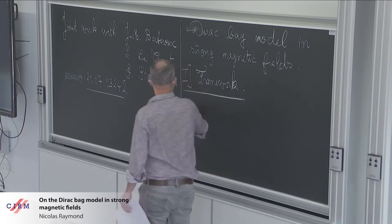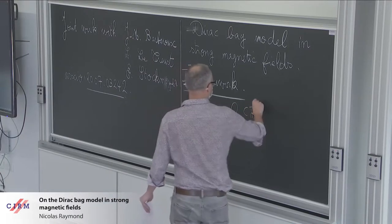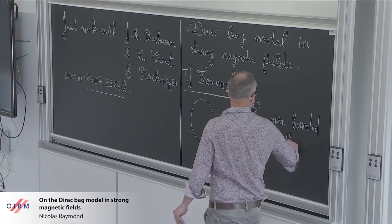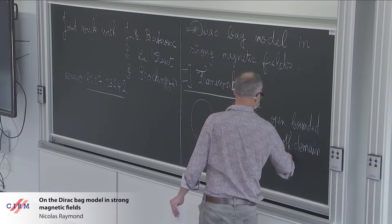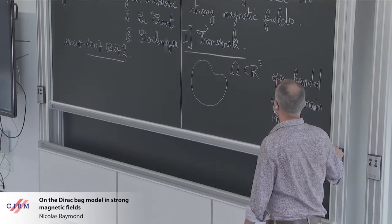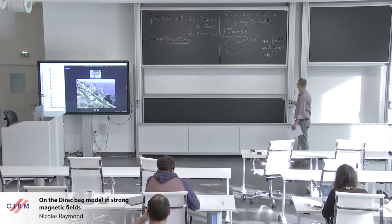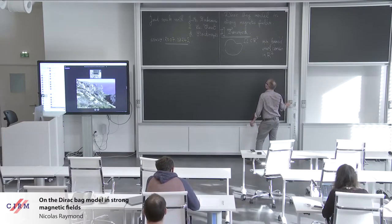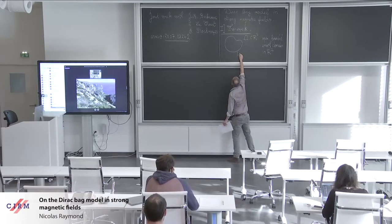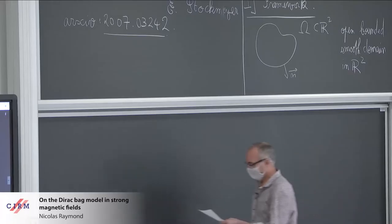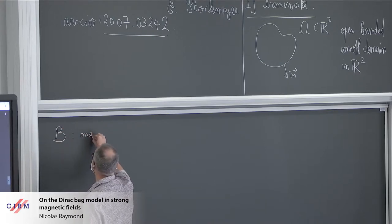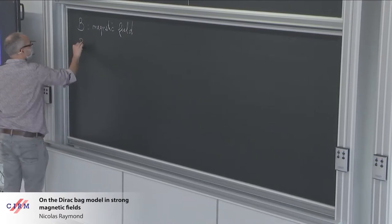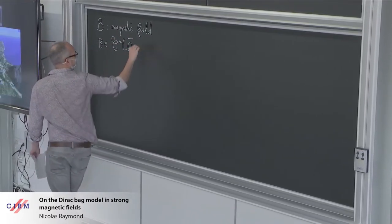In this work, Omega will be an open-bounded smooth domain in R². I will denote by N the outward pointing normal. In this talk, you will have a magnetic field B. This is a smooth function on Omega, real valued.